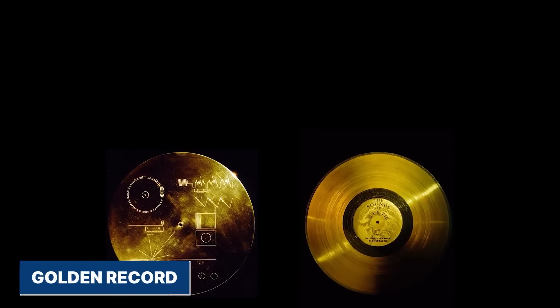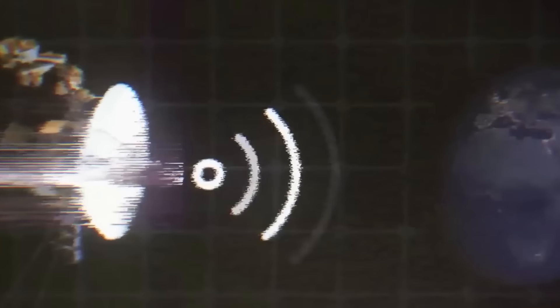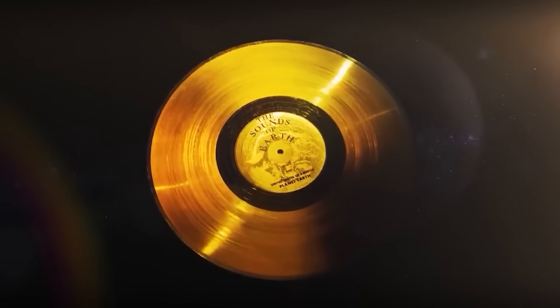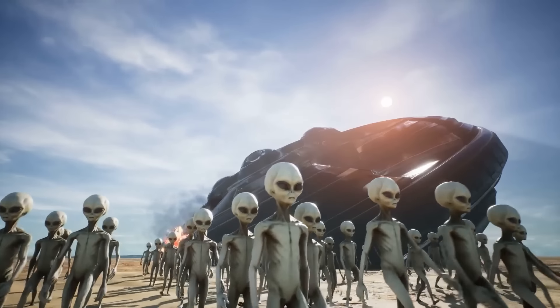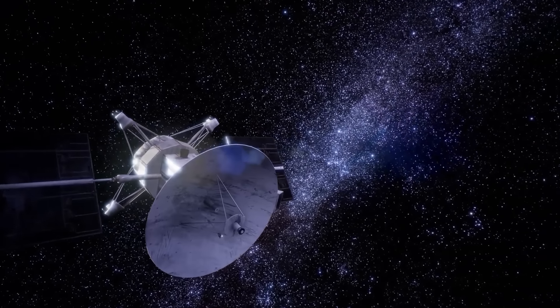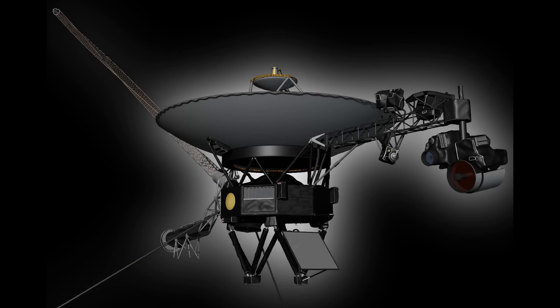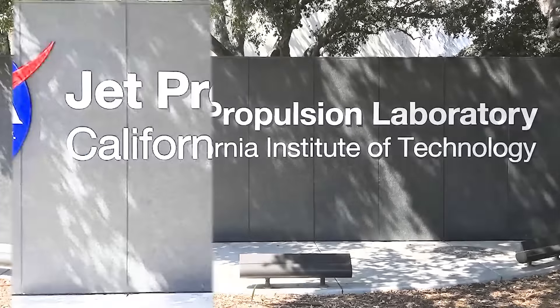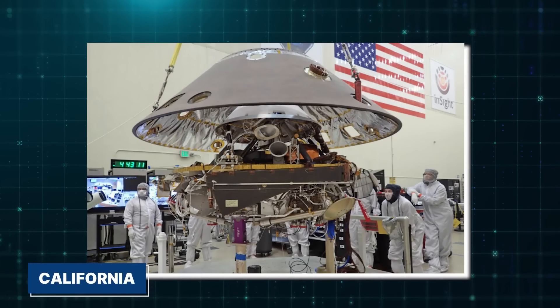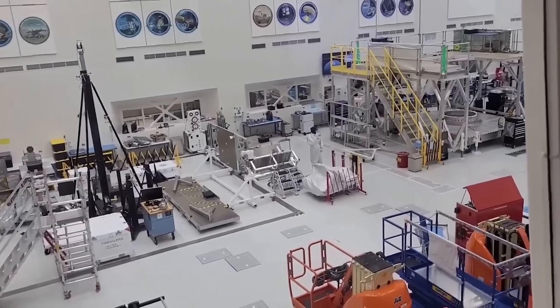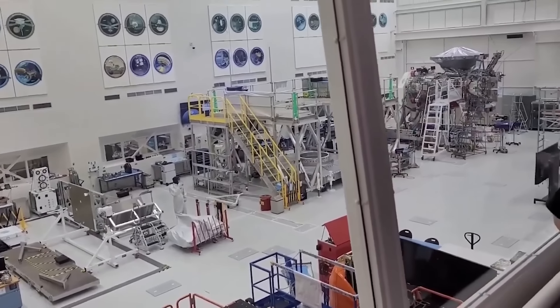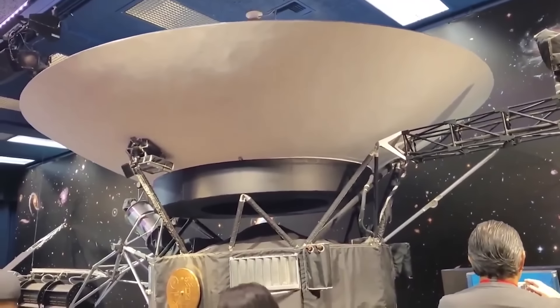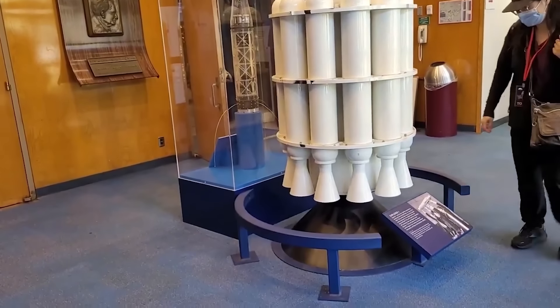Golden Record: A unique feature of the Voyagers is the Golden Record, a phonograph record containing sounds, images, and music from Earth. This record is intended as a message to any extraterrestrial civilizations that might discover the spacecraft. The Voyagers were built at the Jet Propulsion Laboratory, JPL, in Pasadena, California. The spacecraft were assembled in a clean room to minimize contamination, and each component was carefully tested before being integrated into the final design.